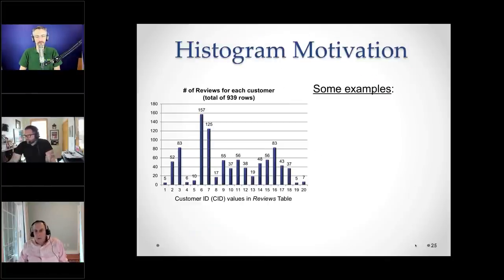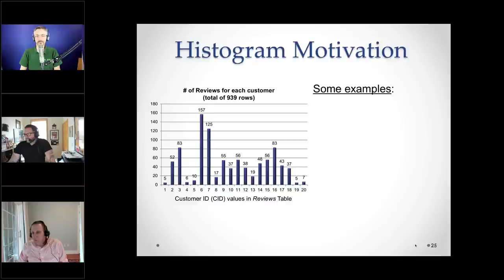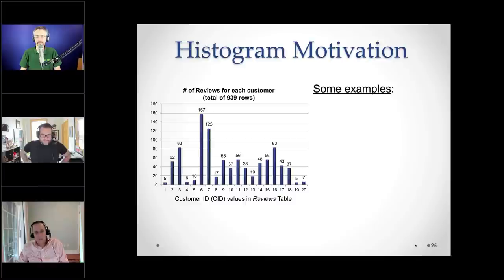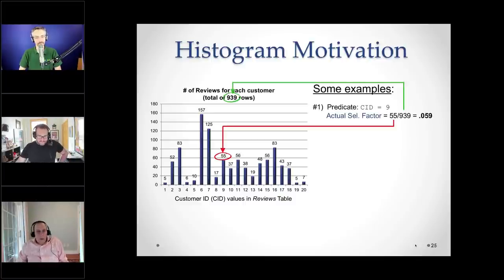There are a bunch of different flavors of histograms. I'm going to talk about two: equal width and equal height. Here I've shown a simple bar chart where the x-axis shows customer ID values in the reviews table. There are 20 customers. Customer 1 has 5 reviews, customer 2 has 52 reviews, customer 3 has 83 reviews, and over on the right, customer 19 has only made 5 reviews. In general, it's impossible for a database to keep track of the exact count for every distinct value.